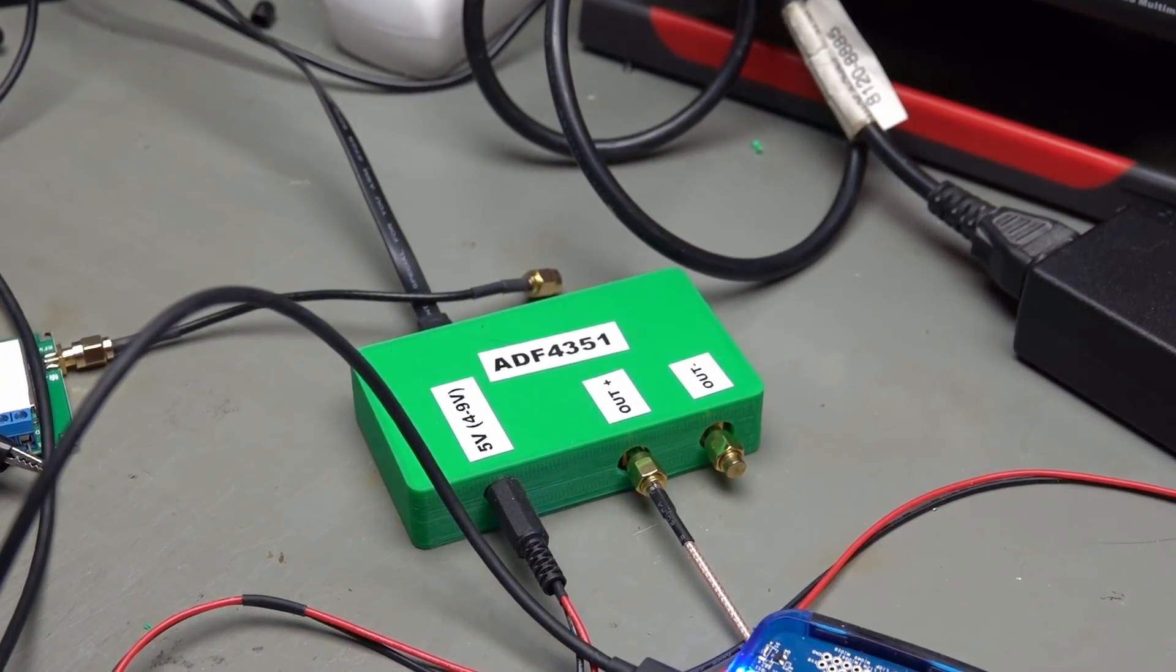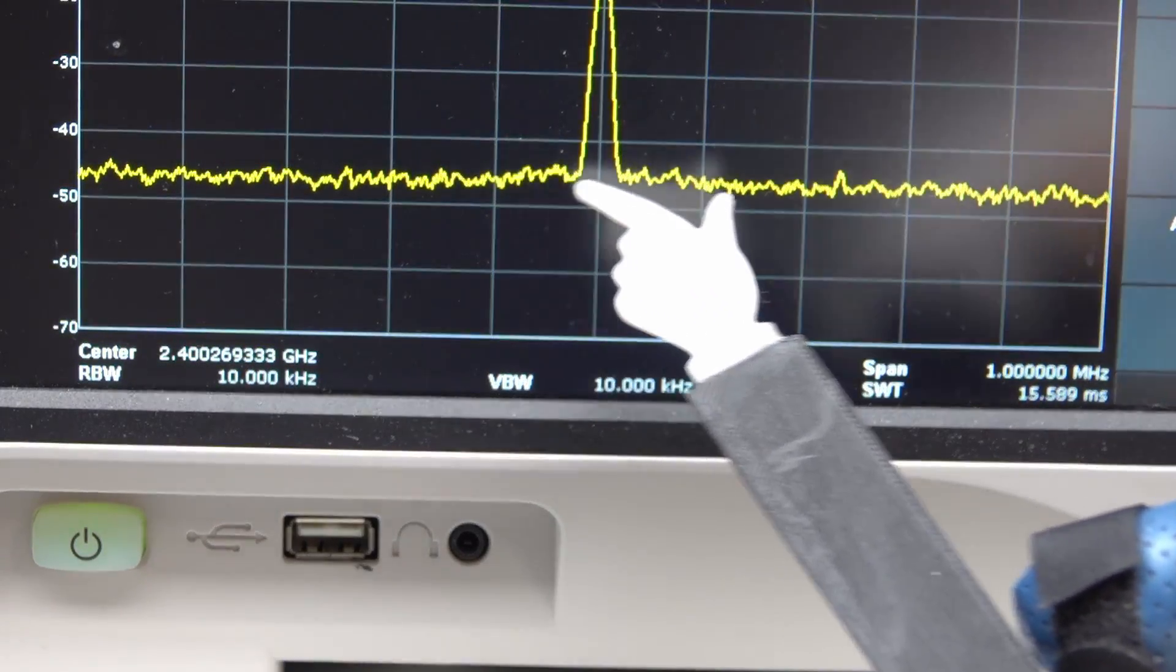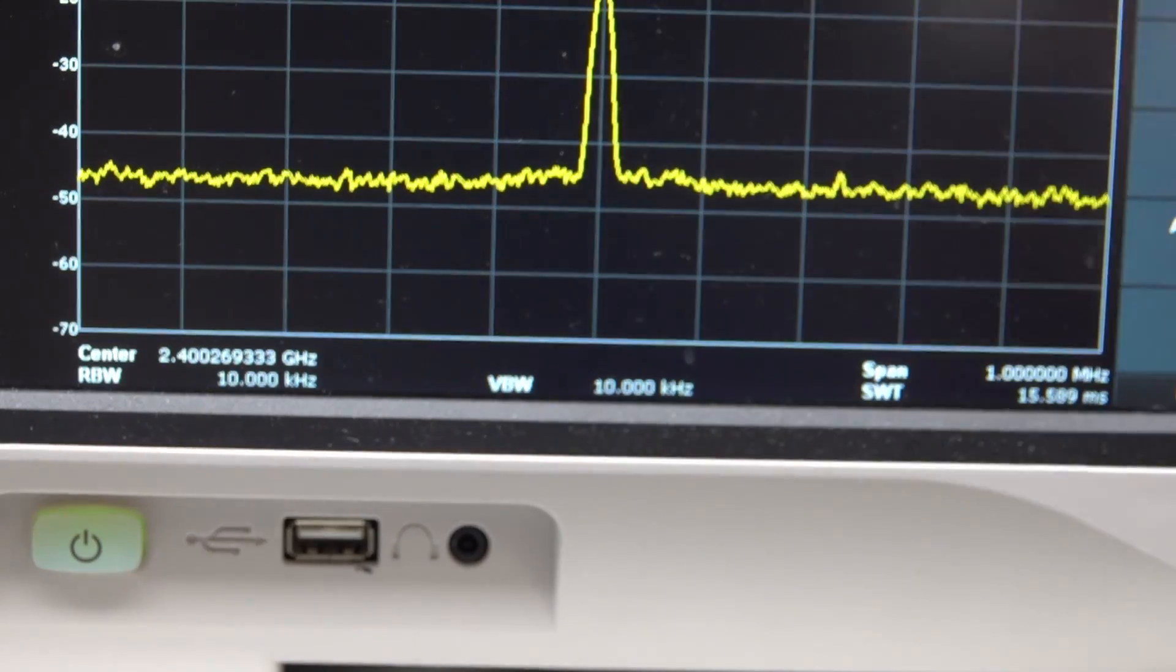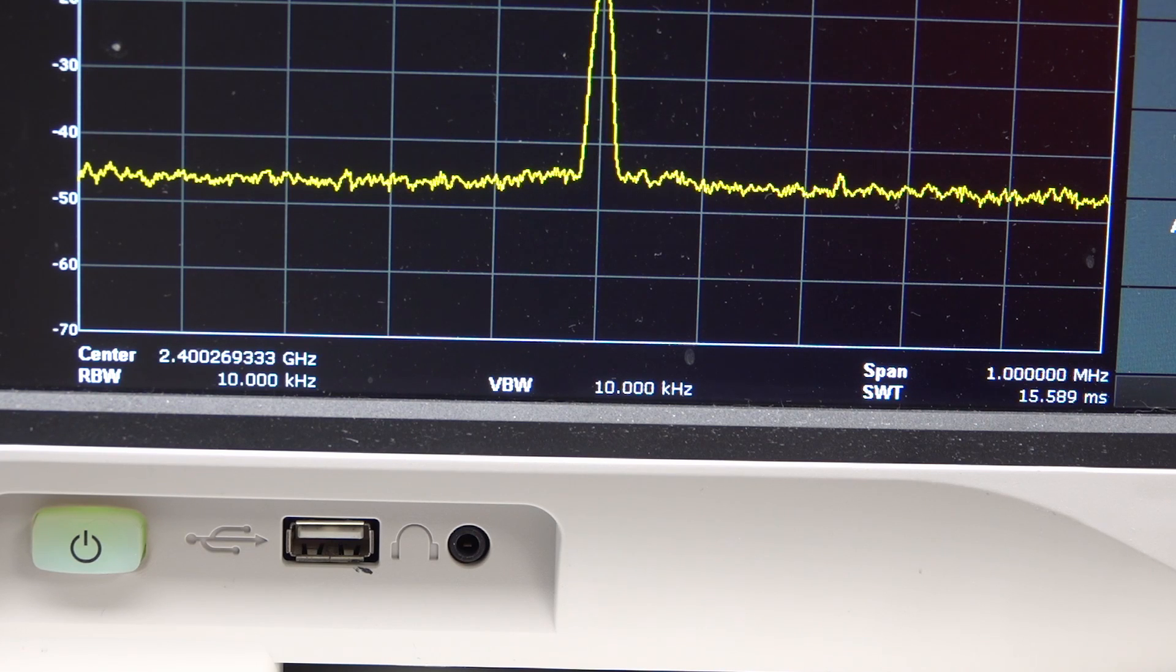If we reduce the power to minus 15 dBm, these frequencies are still there. So it seems that they come from the deep soul of the Pluto and not from any overdriven amplifier.